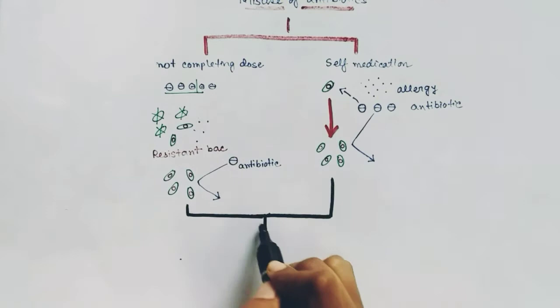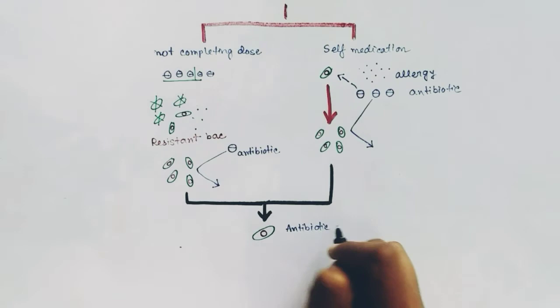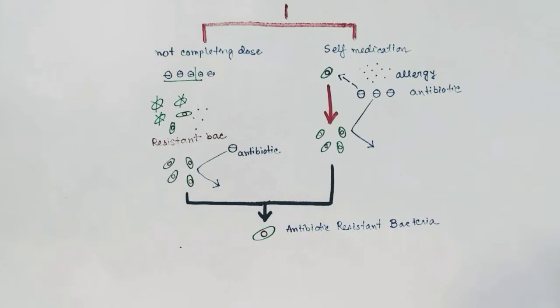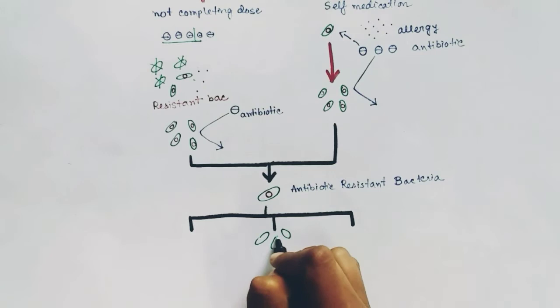By these misuses of antibiotics, what we are getting is resistant bacteria — this is the antibiotic-resistant bacteria. Now, how can this antibiotic-resistant bacteria cause a problem? It can cause a problem in three ways. Number one: if this antibiotic-resistant bacteria multiplies and causes a disease, that disease will not be cured easily by antibiotics.